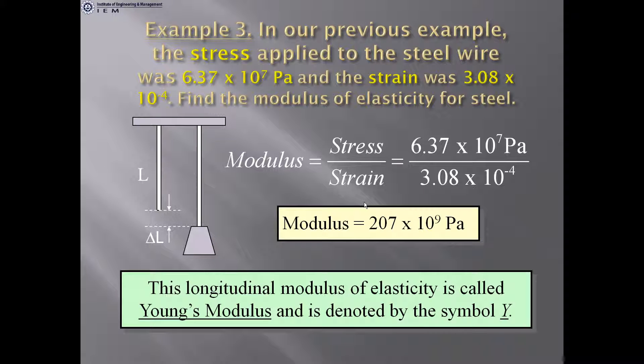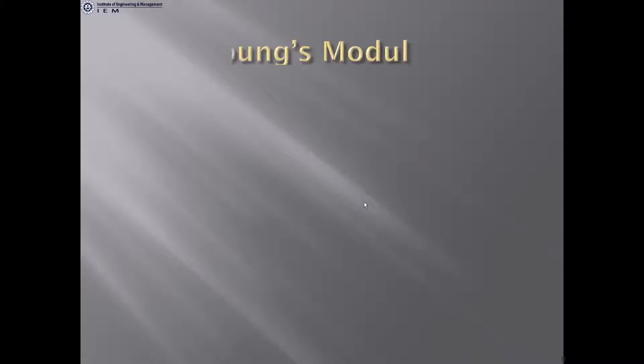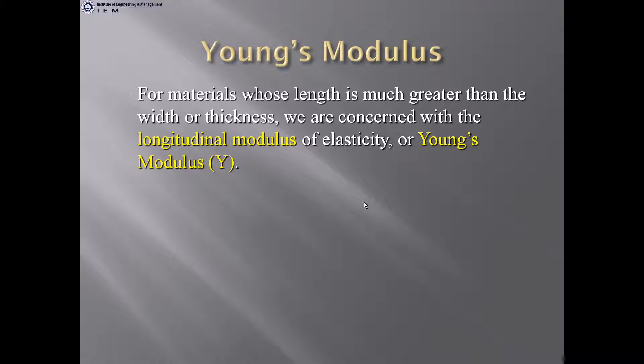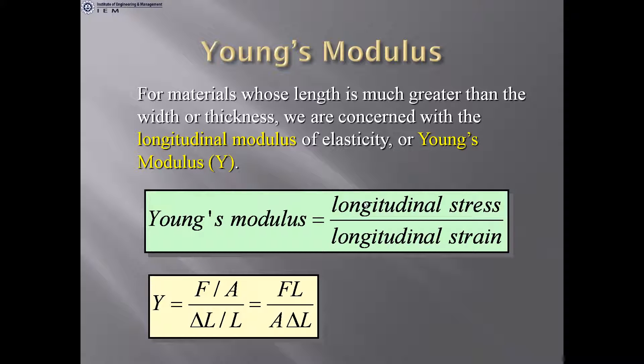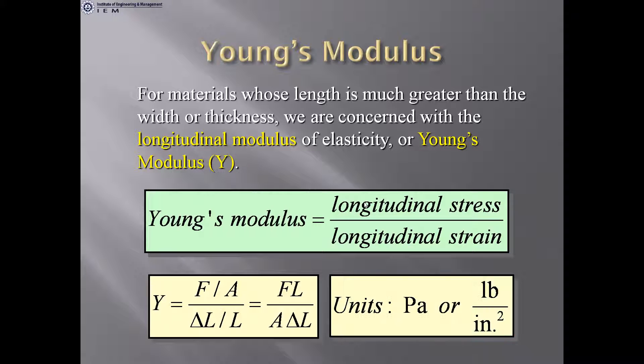Young's modulus: for materials whose length is much greater than width or thickness, we use the longitudinal modulus of elasticity — Young's modulus. Y = longitudinal stress / longitudinal strain = (F/A) / (ΔL/L) = FL / (A · ΔL). Its unit is Pascal or pound per inch squared.